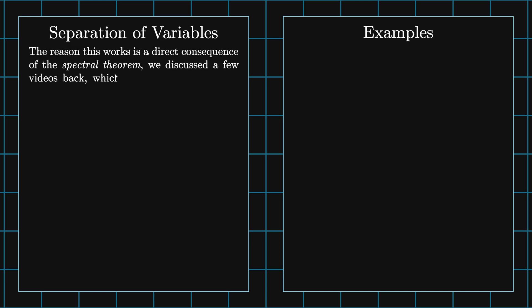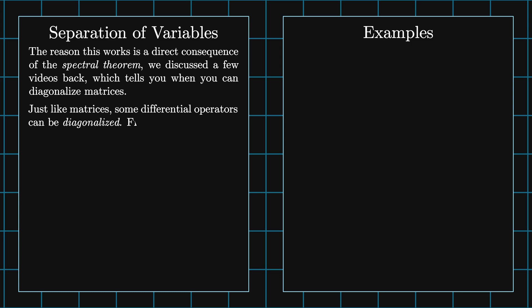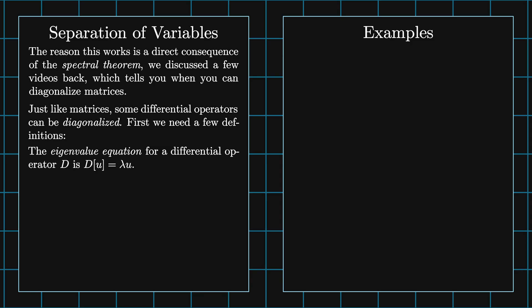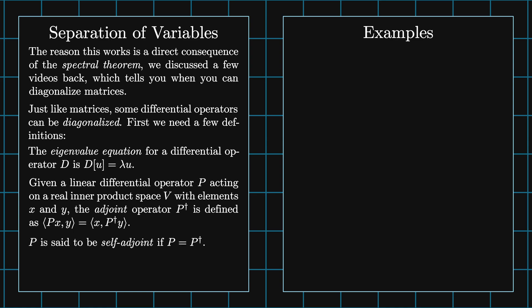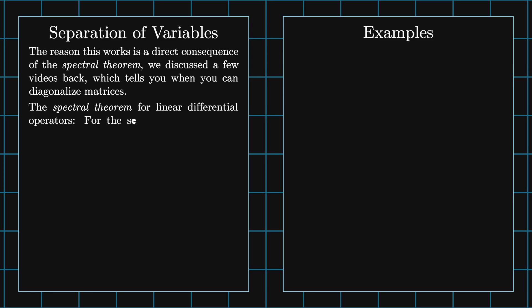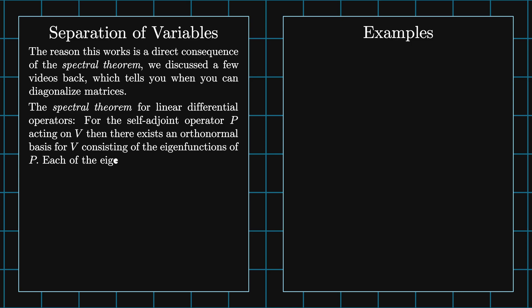The last step is calculating d n equals 2 over L times the integral from 0 to L of f of x times sine of n pi x over L dx. The reason this works is a direct consequence of the spectral theorem that we discussed a few videos back, which tells you when you can diagonalize matrices. Just like matrices, some differential operators can be diagonalized. Before we get there, we're going to need a few definitions. The eigenvalue equation for a differential operator D is D of U equals lambda U. Given a linear differential operator P acting on a real inner product space V, which has elements x and y, the adjoint operator P dagger is defined by the equation: the inner product of P x with y equals the inner product of x with P dagger y. P is said to be self-adjoint if P equals P dagger.